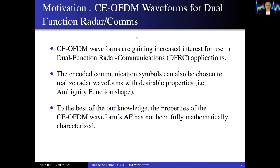The primary motivation for this work is that CE-OFDM Waveforms are getting increasing interest for use in dual function radar communications applications. Specifically on the radar side, the communication symbols you encode into the waveform could be used as a discrete set of parameters that synthesize waveforms with desirable properties, for example, a desirable ambiguity function shape. There have been some efforts in the literature pursuing these ideas, but to the best of our knowledge, the properties of the CE-OFDM Waveforms Ambiguity Function has not been fully mathematically characterized, and so we set about trying to do just that.